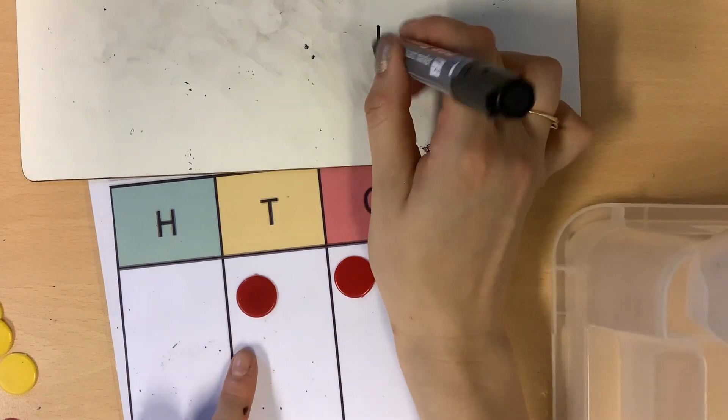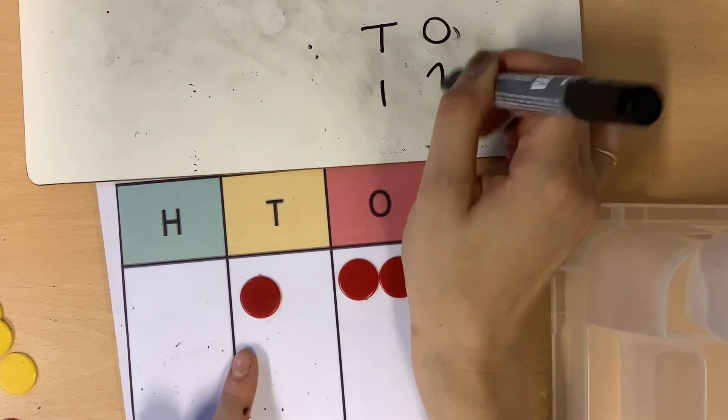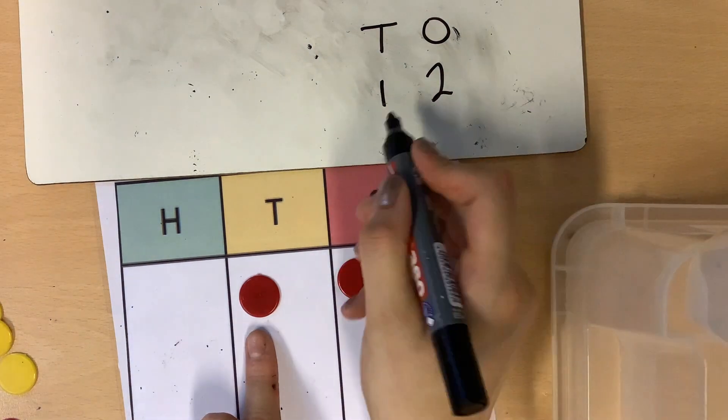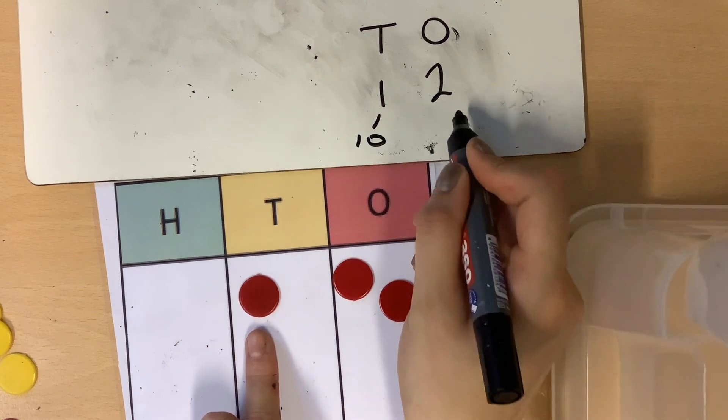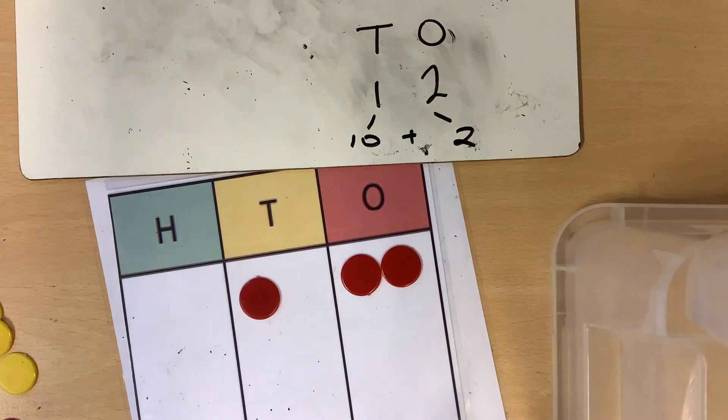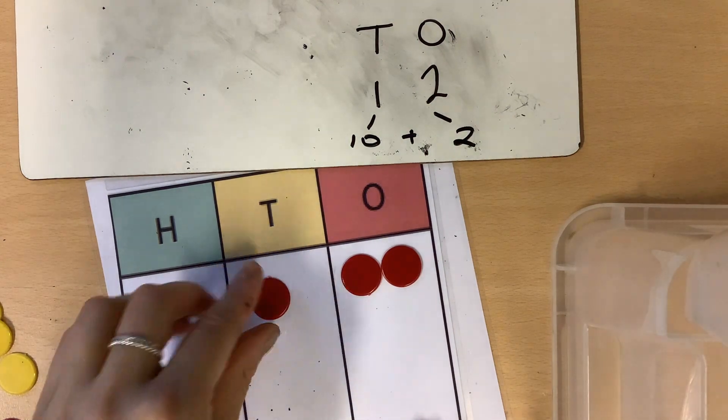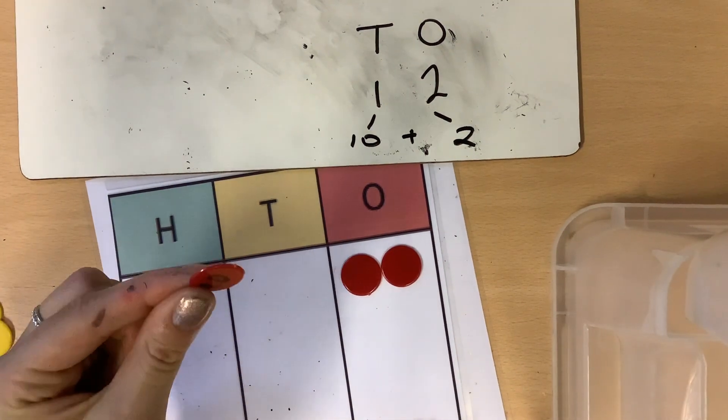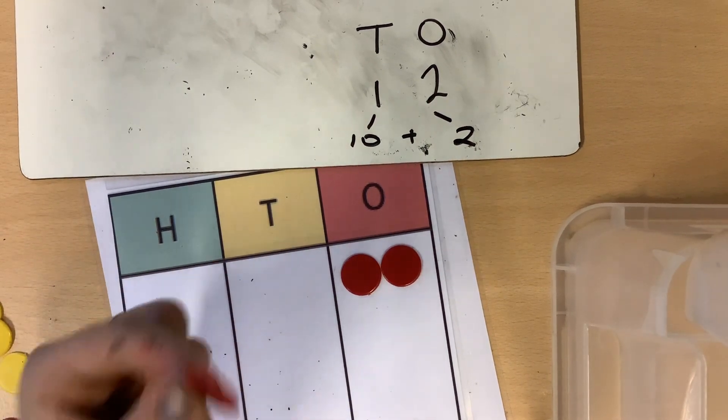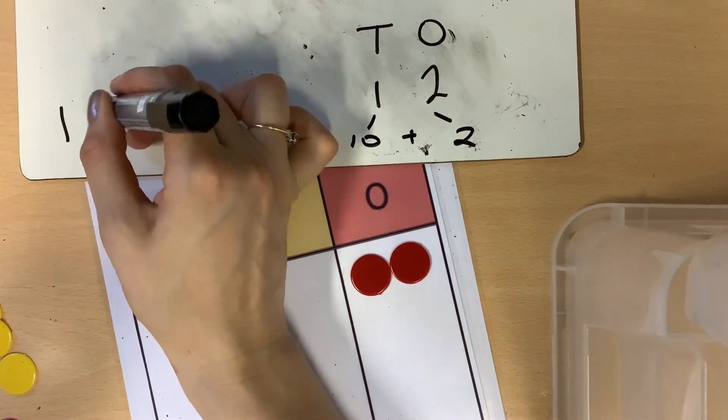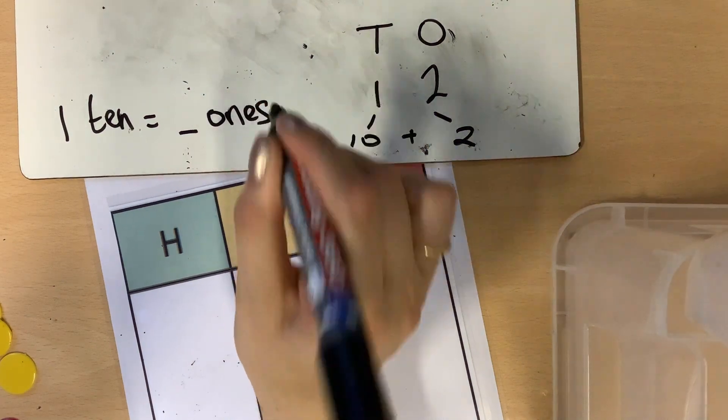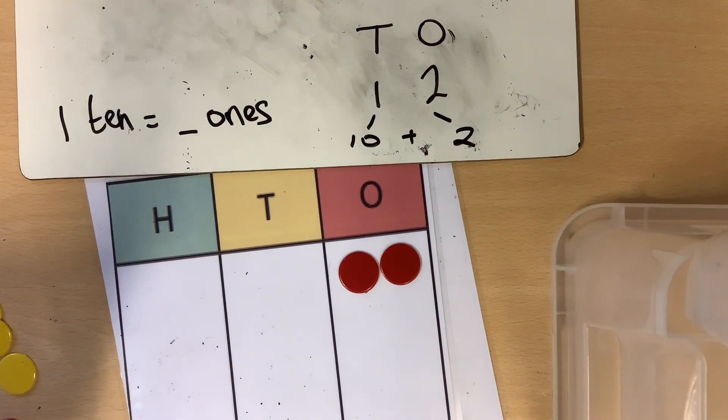I'm going to use the number here. 1 ten, 2, 1. Could I put this 1 ten counter somewhere else? Could I do a fair swap and change the place value? What do I know about 1 ten? Let me write it down. 1 ten is the same as something ones.